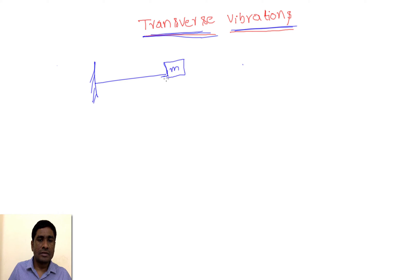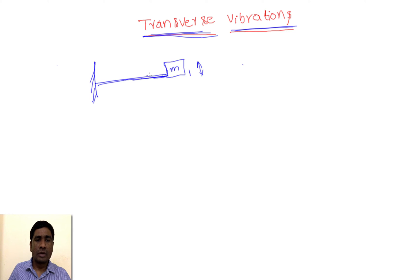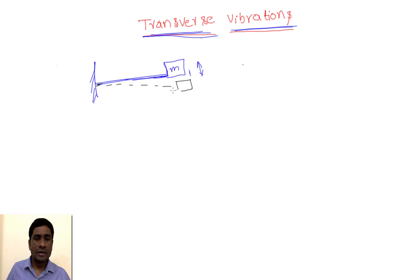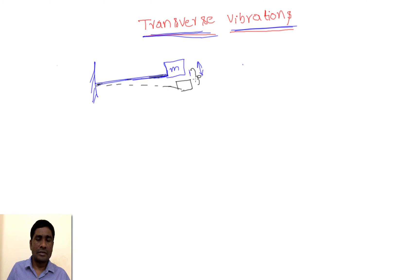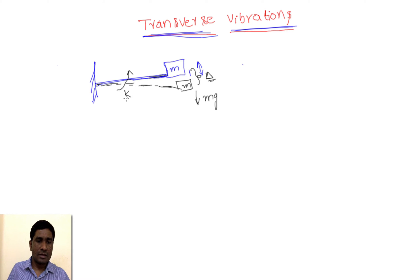At the end of the cantilever we have a mass, and we can say there is a force acting in the downward direction. If I give a small perturbation or disturbance to this mass m, it will vibrate to the bottom and to the top — this is transverse vibration. Before giving any initial perturbation, it will be in the equilibrium position, where it is bent a little because of the mass at the end of the cantilever. This is called the initial displacement in the downward direction.